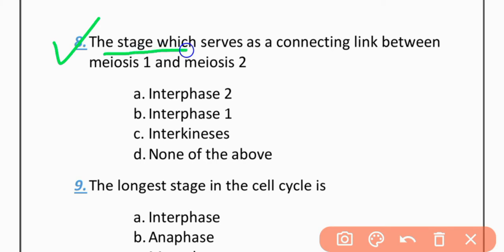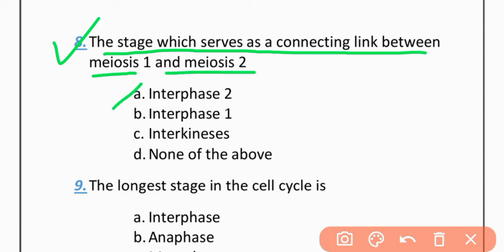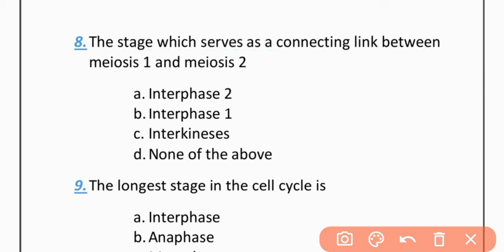MCQ 8: Which stage serves as a connection and linkage between meiosis 1 and meiosis 2? Option A: Interphase 2. Option B: Interphase 1. Option C: Interkinesis. Option D: None of the above. The correct option is C — Interkinesis.